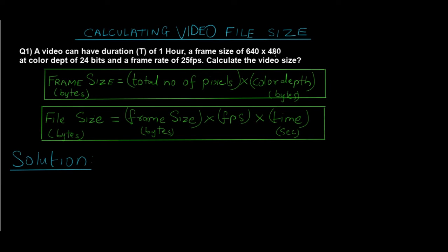To calculate the frame size we have to take those dimensions and multiply it with the color depth, which is also supposed to be in bytes. So this is the first formula. Then we have to substitute this frame size in the formula for calculating the file size of the actual video. The file size is given as frame size into FPS into time in seconds, and frame size has to be in bytes.